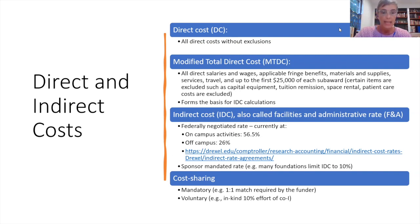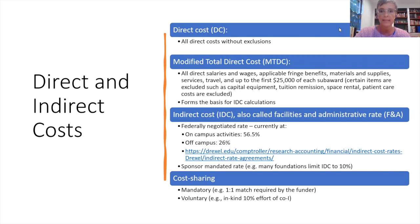So what is the modified total direct cost? That is all your salaries and wages, applicable fringe, materials and supplies, services, travel, and part of each sub-award up to $25,000. Other items are typically excluded, such as capital equipment, tuition remission, space rental, and patient care costs.